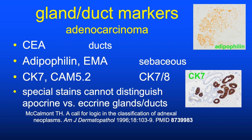CEA (carcinoembryonic antigen) can highlight sweat ducts. Adipophilin or EMA (epithelial membrane antigen) can highlight sebaceous glands. Cytokeratin 7 or the mini cocktail CAM 5.2—containing cytokeratin 7 and 8—can specifically highlight sweat glands. These are all markers useful for screening for adenocarcinoma or gland-forming carcinomas.